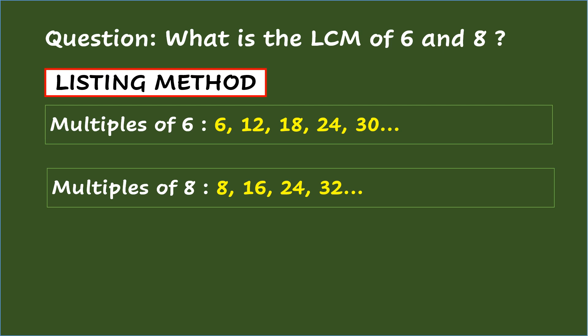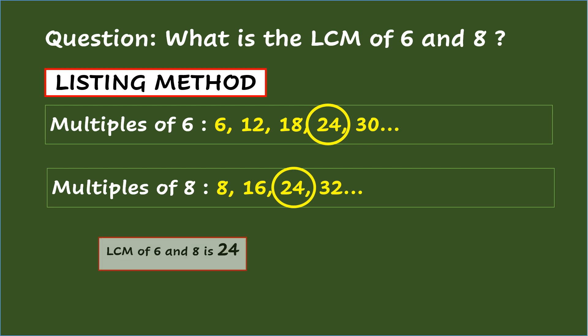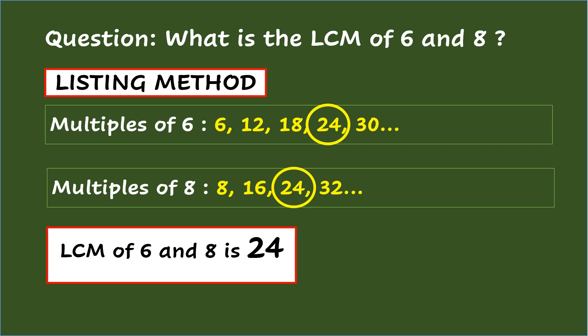Take note that you will continue listing the multiples of the given number until at least one of the multiples appears on all the lists. In our case, one common multiple appears in the list of multiples of 6 and 8, and that is 24. Since 24 is the smallest common to the given numbers, therefore, the LCM of 6 and 8 is 24.